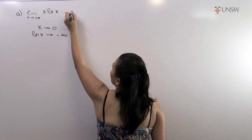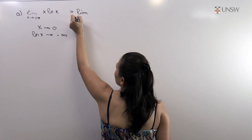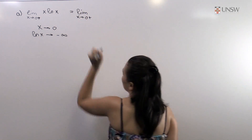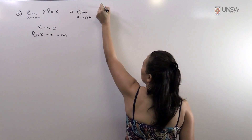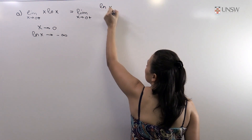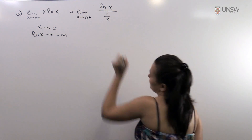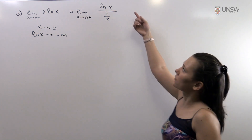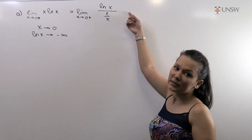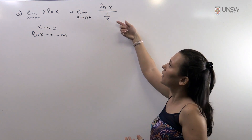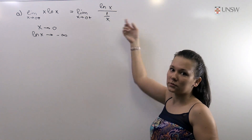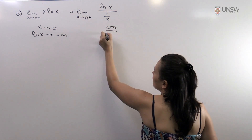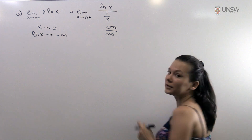We will write it as the limit as x goes to zero of ln(x) over 1/x. Now when x goes to zero, ln(x) goes to minus infinity and 1/x goes to infinity. So it's a limit of the type infinity over infinity.